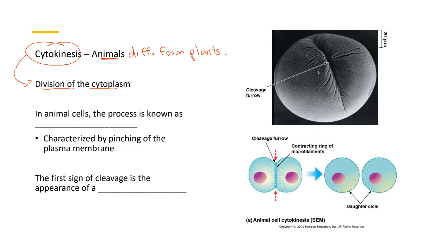So in animal cells, the process is usually known as cleavage. And you can see it because of the pinching of the plasma membrane. That's what it looks like, a cleavage. The first sign of cleavage is the appearance of something called a cleavage furrow.